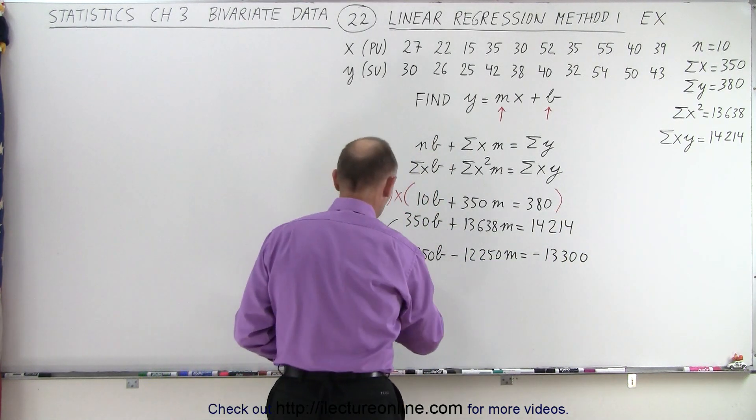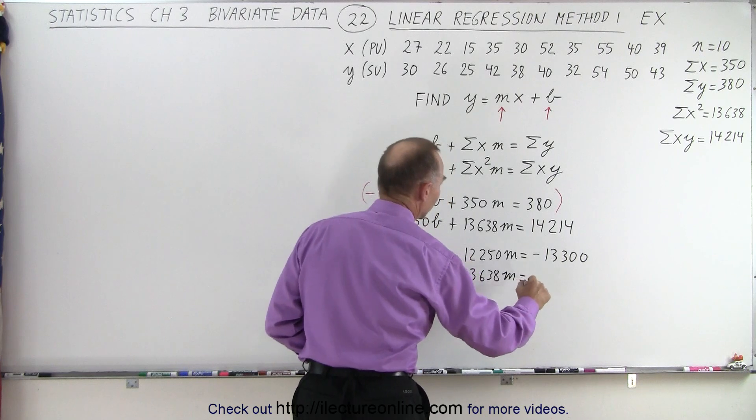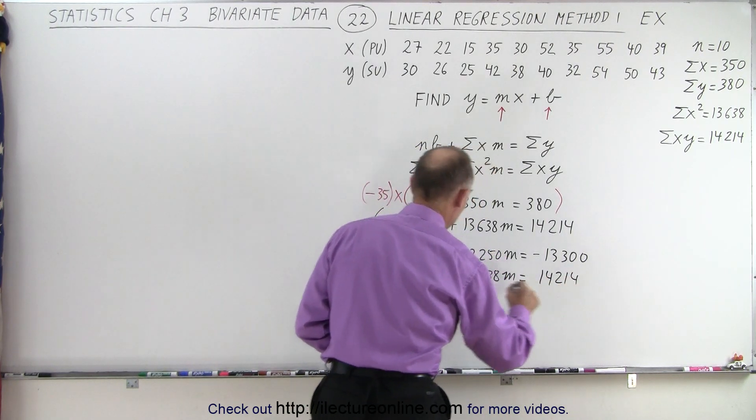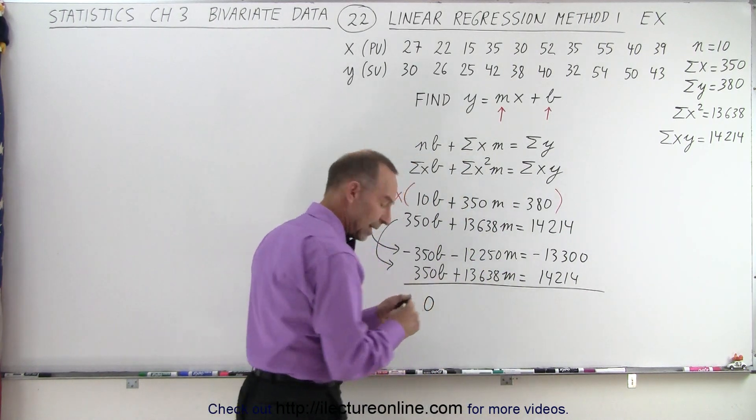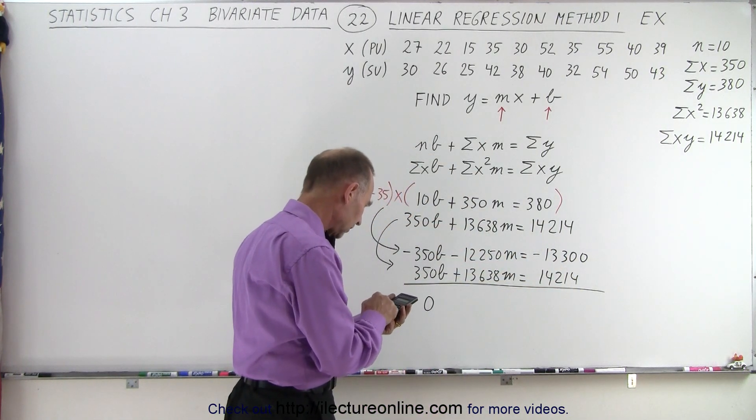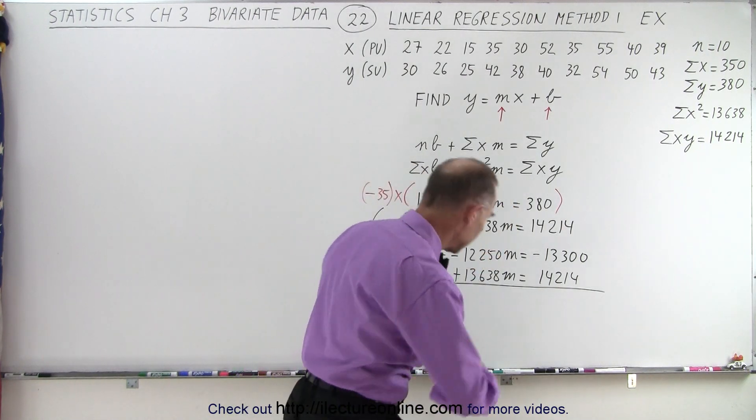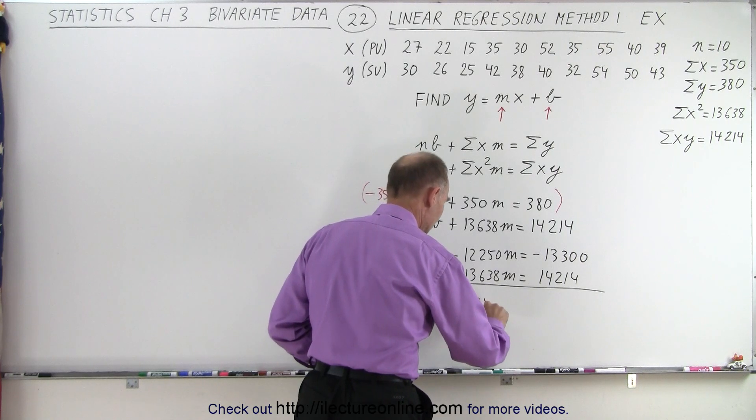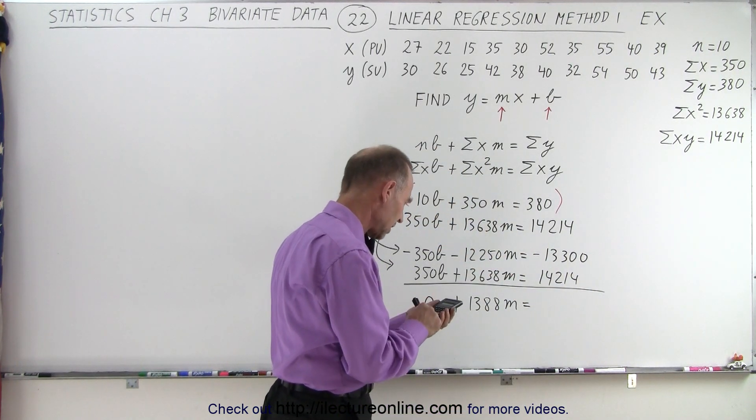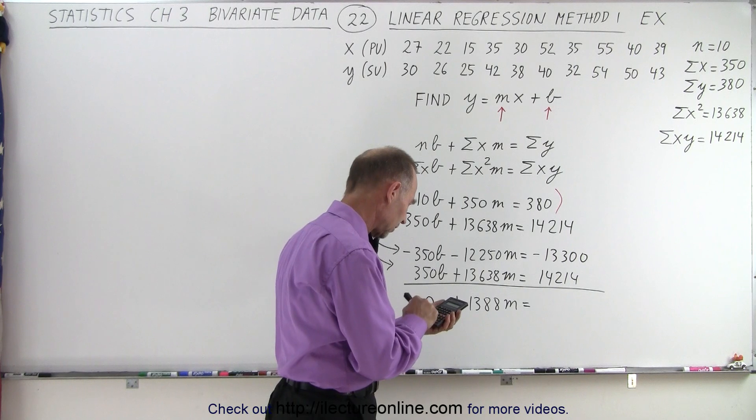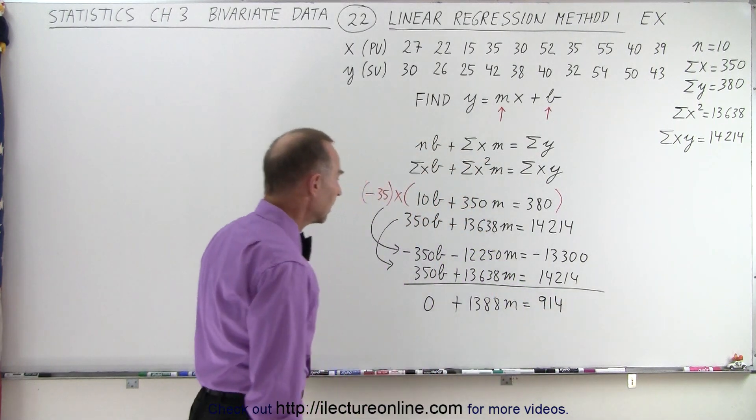So I multiply the top equation by negative 35. Now I add to that the bottom equation, so I get 350b plus 13,638m is equal to 14,214. Now add those together. Notice the b drops out, that becomes zero. Then I add those two together. So we have 13,638 minus 12,250. That gives us 1,388m is equal to, and here we get 14,214 minus 13,300, which is 914.